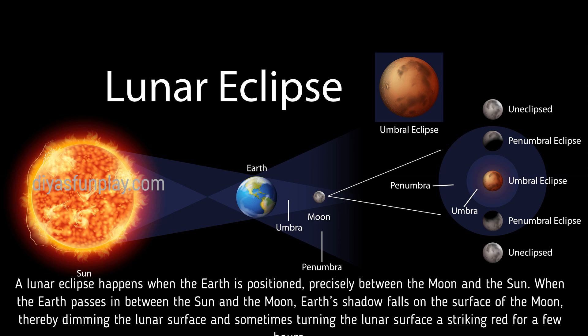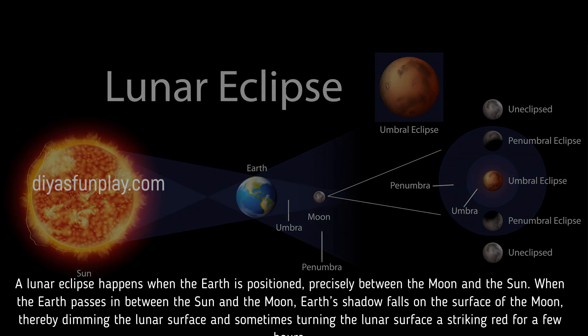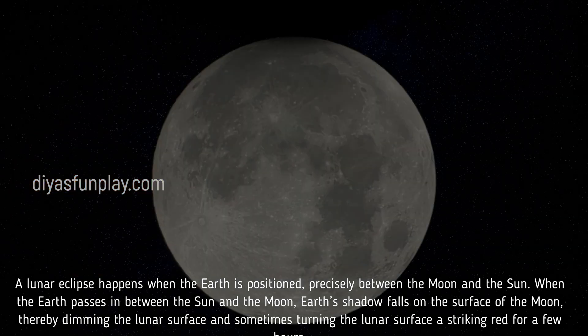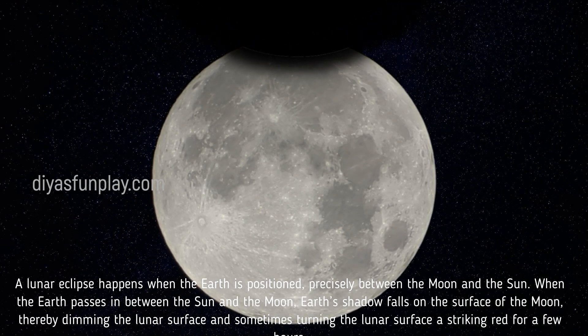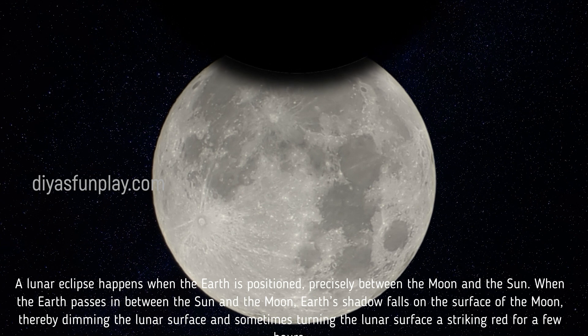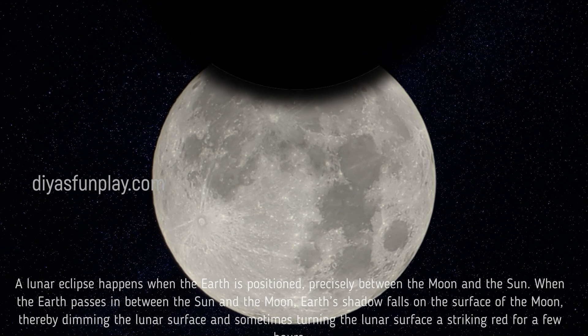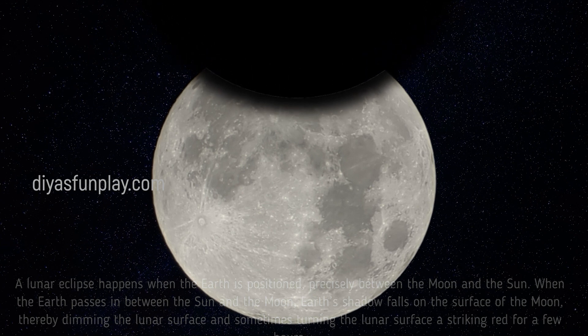When the Earth passes in between the Sun and the moon, Earth's shadow falls on the surface of the moon, thereby dimming the lunar surface and sometimes turning the lunar surface a striking red for a few hours.